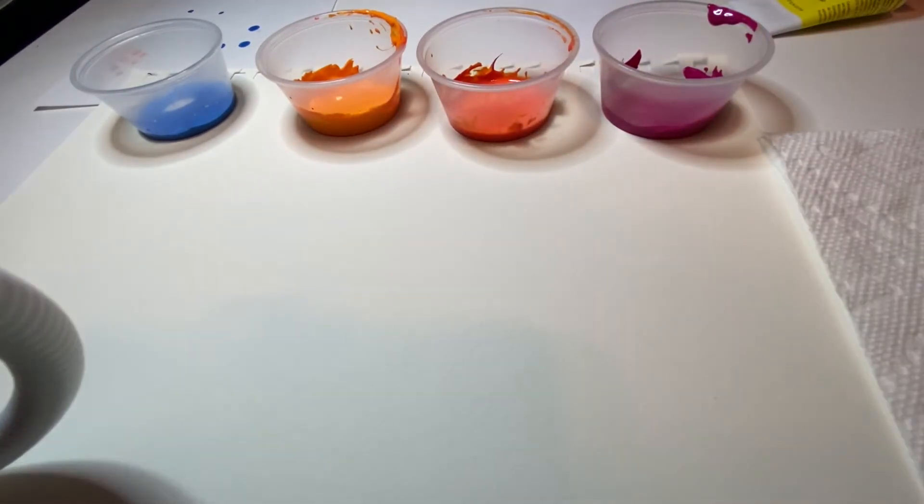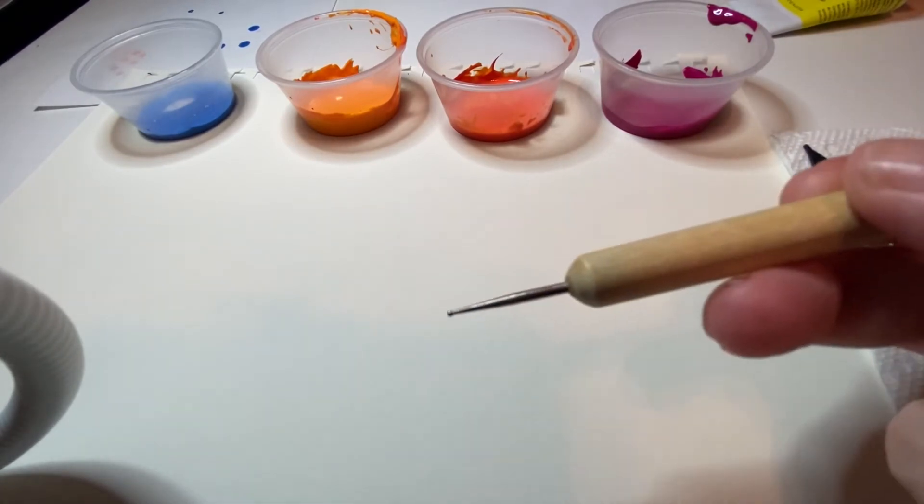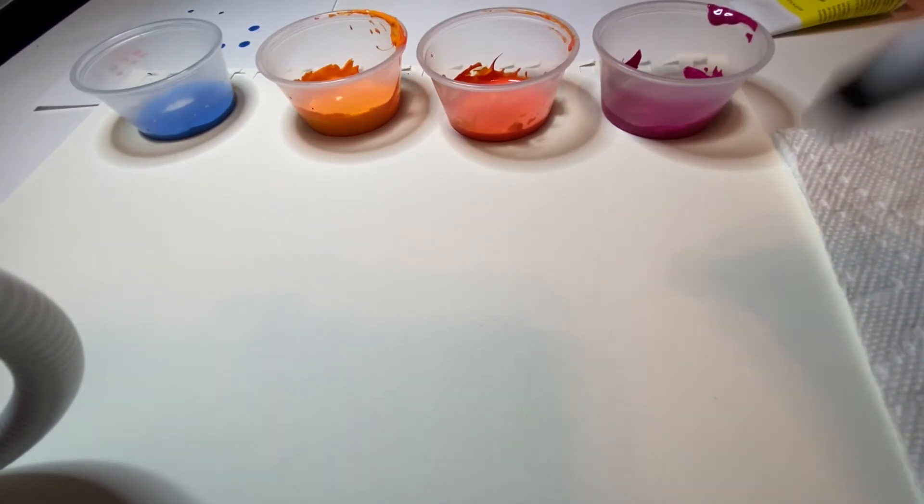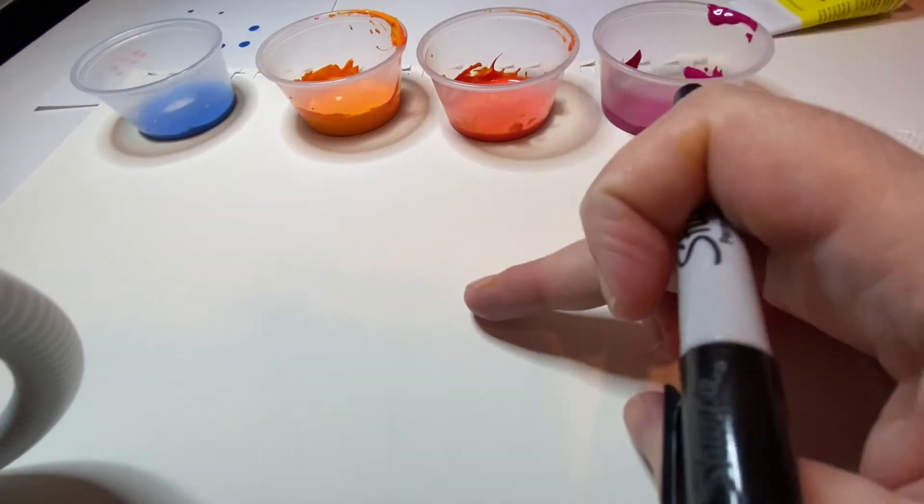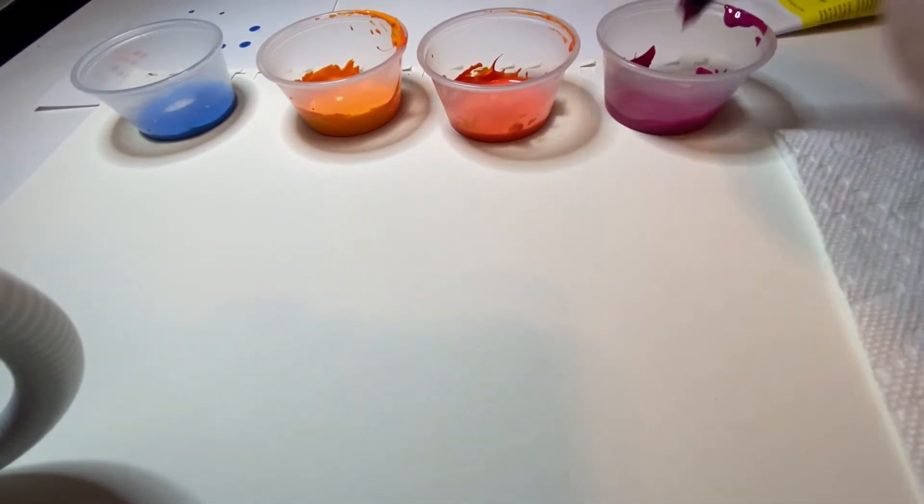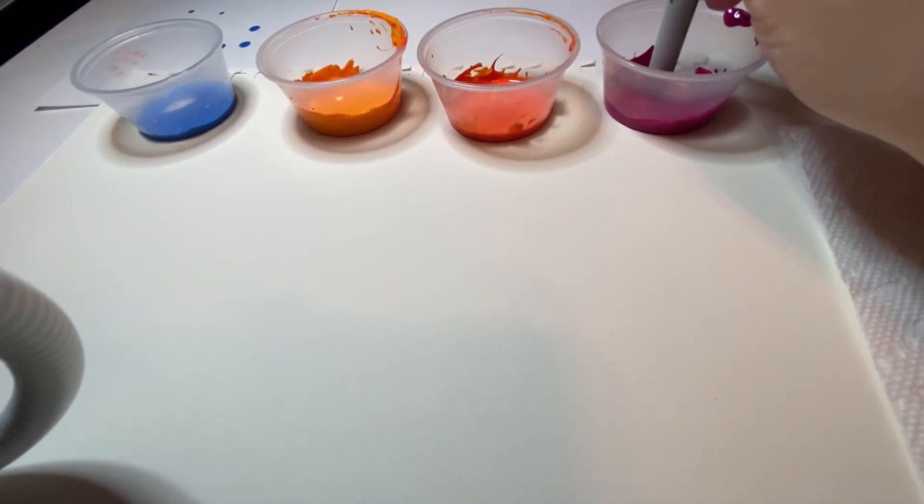So I'm just going to lay out my colors in the direction that I want them to go. So I've done that. I want my magenta then I'm going to do this dark orange then the light orange then my blue.